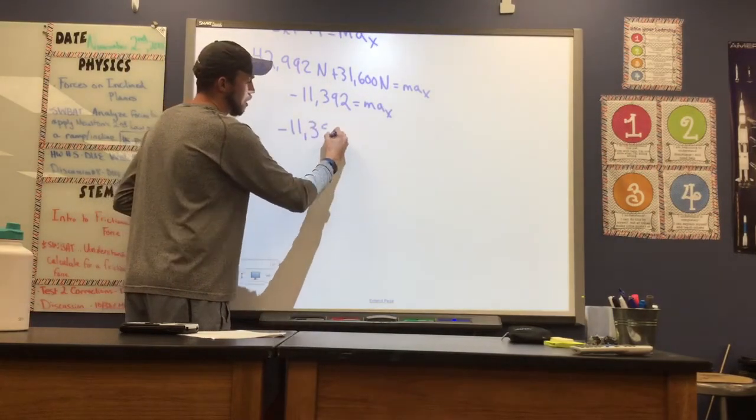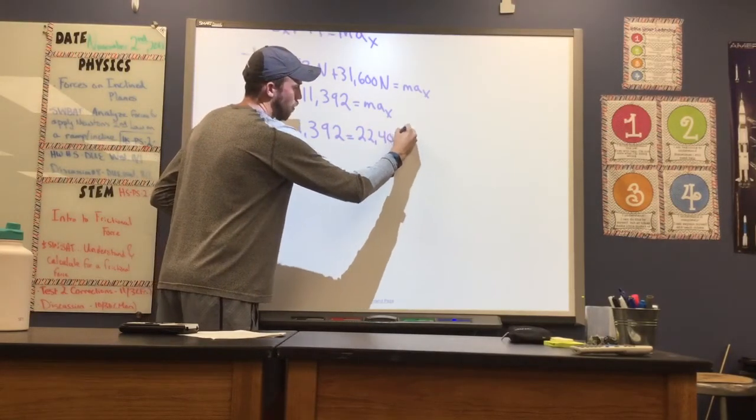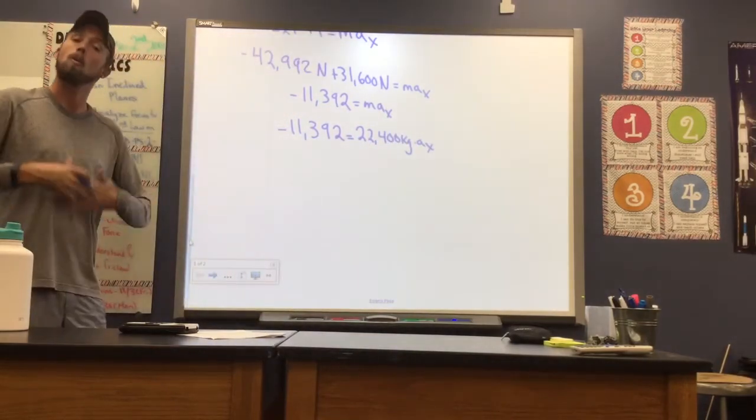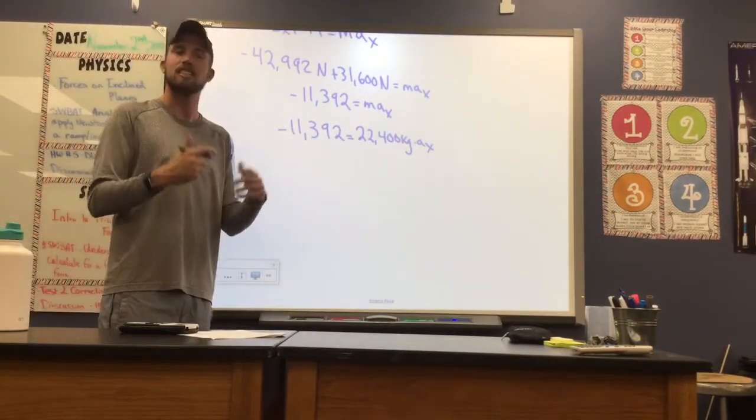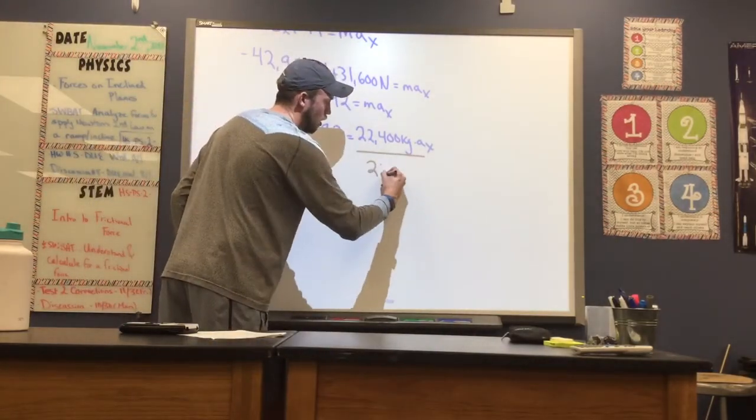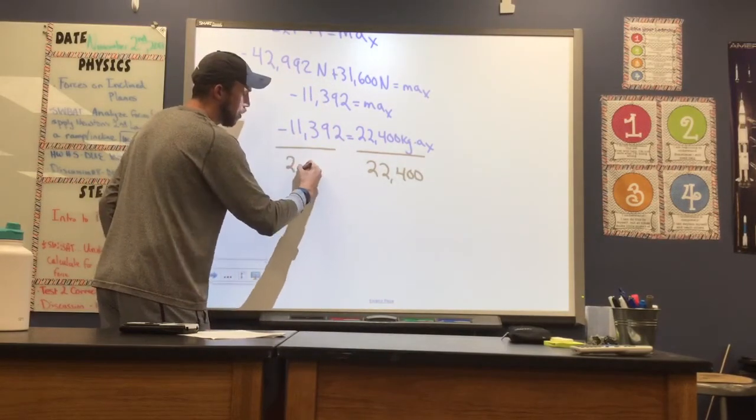Negative 11,392 is equal to my mass, 22,400 kilograms, times acceleration. Once I've done that, you'll notice to get acceleration by itself, we simply need to divide by our mass. So I'll do that on both sides of our equation. I'll divide by 22,400.